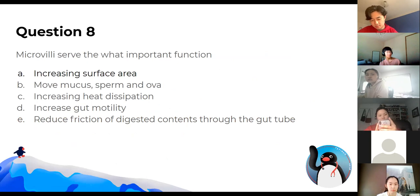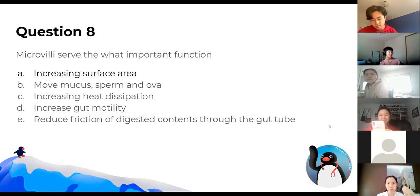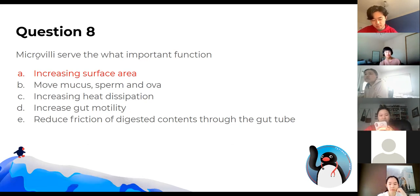Microvilli serve what important function? The answer is increasing surface area. You'll find microvilli in your gut to help absorb nutrients. The second structure shown is cilia — similar but different.